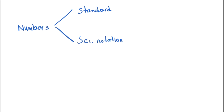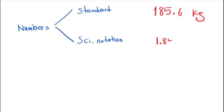We are going to learn the difference between standard numbers and scientific notation. For example, you may say 185.6 kilograms — that is a standard number with a unit, which we call a measured number. In scientific notation, that same number would be reported as 1.856 times 10 to the positive 2 kilograms. As you can see, the format of our report has changed — it looks like we have something extra.